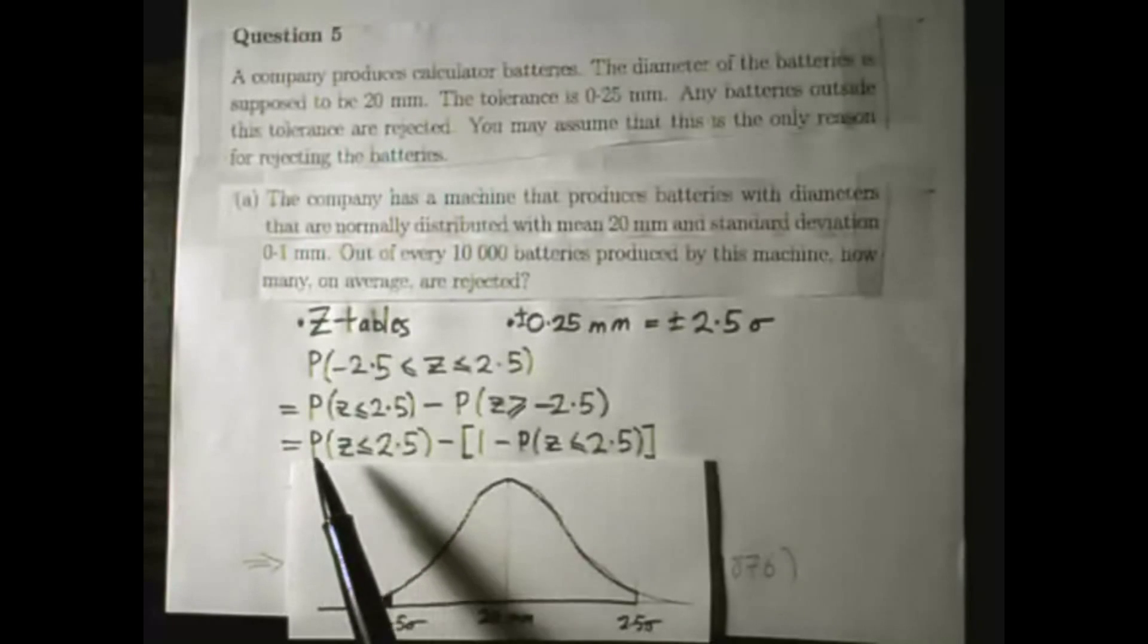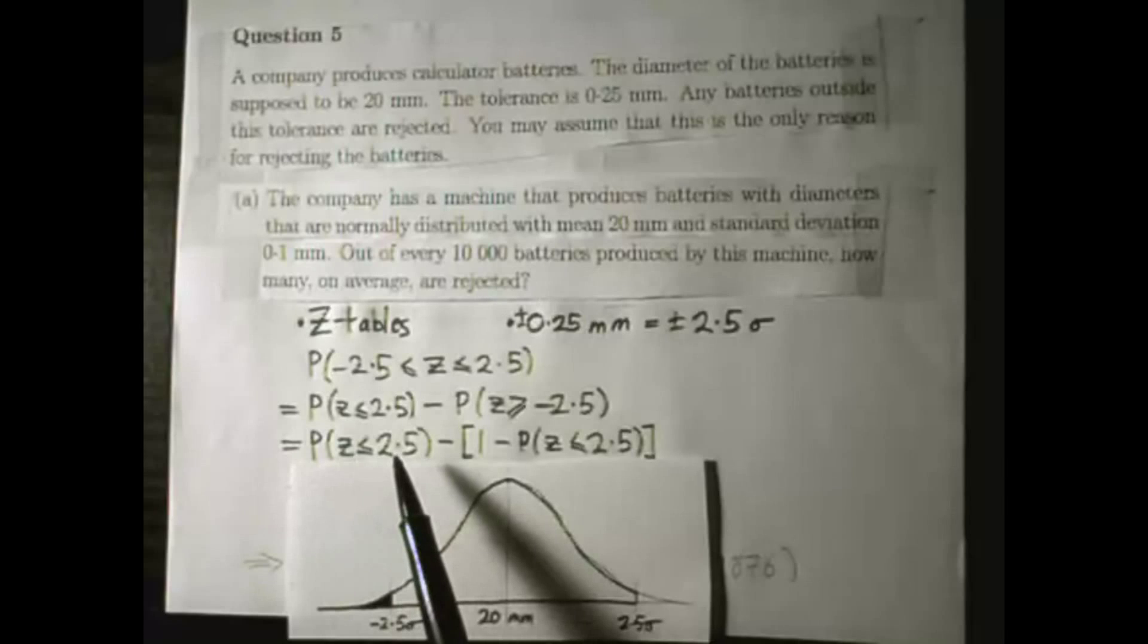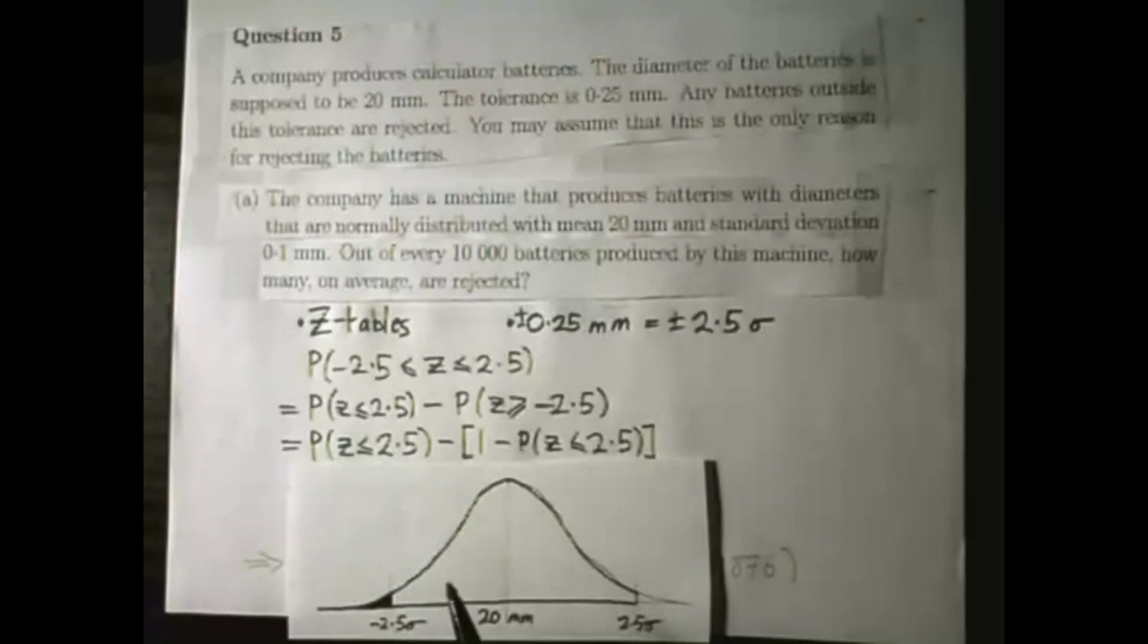I can leave this part as it is, where z is less than 2.5 standard deviations from the mean.